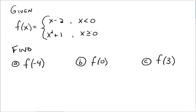So that means when we have any numbers that are less than 0, we use this part of the function to evaluate it. And any number greater than 0 fits into this category, and we use this part of the function to evaluate it. Functions can be defined in two pieces, three pieces, multiple pieces — we're just trying to get the concept down right now.